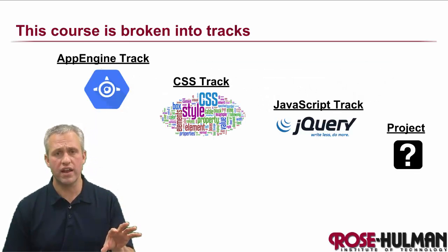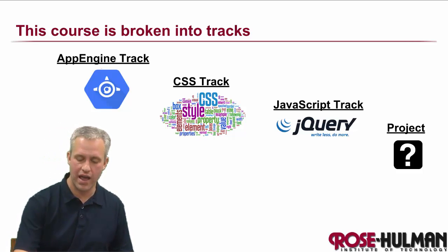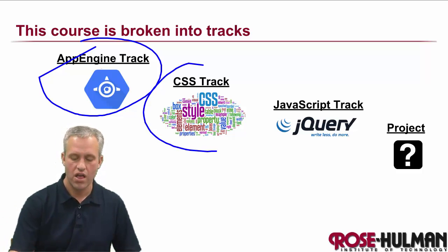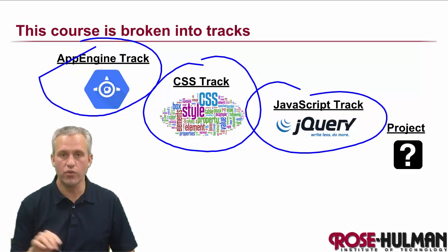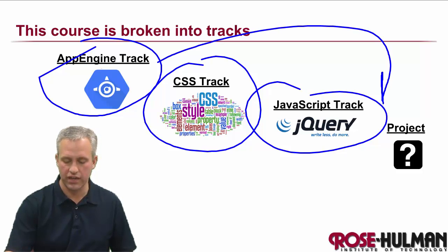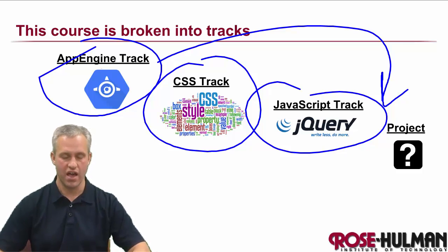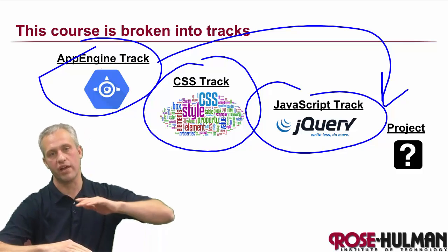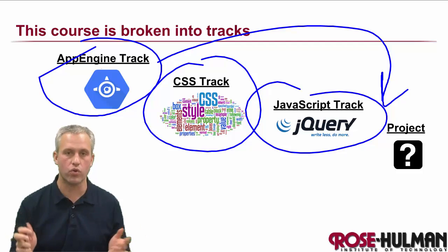To break the course down, we've broken it into different tracks. We're going to be working on an App Engine track first, then we're going to get into CSS and then JavaScript. If you already know these topics, you'll discover these are out of order — really, if you wanted to build from the ground up, you'd learn HTML and CSS, then JavaScript, then a back-end tool like App Engine. But we've put App Engine first.